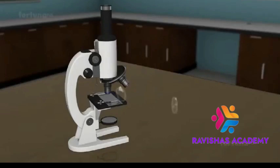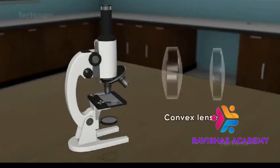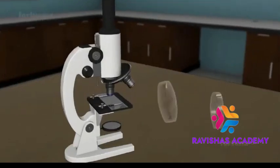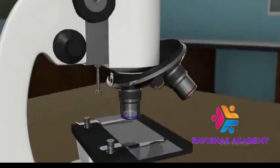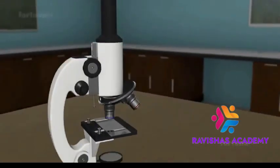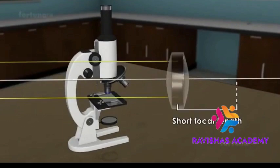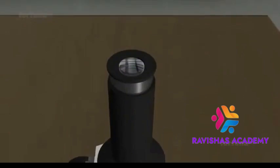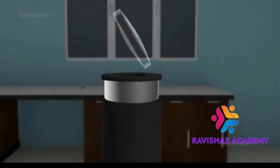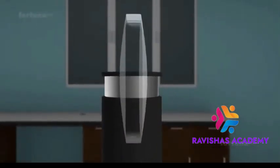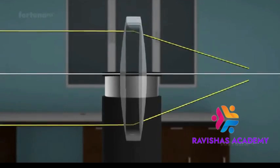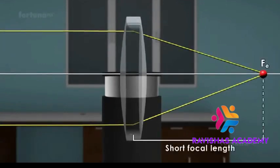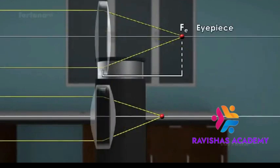The lenses are convex with different focal lengths. The lens closer to the object is the objective and has a short focal length, usually below 1 cm. The lens nearer the eye is the eyepiece. Although the eyepiece also has a short focal length, it is still greater than the focal length of the objective.